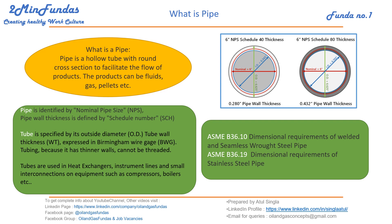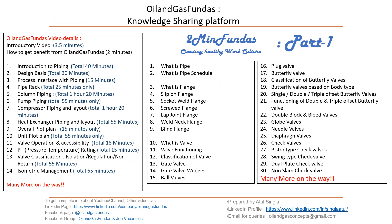We always refer to ASME B36.10 and B36.19. These standards cover the dimensional requirements for welded and seamless pipe, and for stainless pipe respectively. Since it is very difficult to remember all the ID and OD dimensions, it is easy to refer to these two standards to get all the dimensional details.